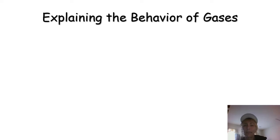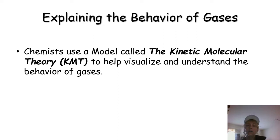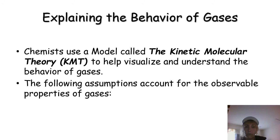How do chemists explain the behavior of gases? Chemists use a model called the kinetic molecular theory, or KMT, to help visualize and understand how gases behave. We're going to look at the tenets of the kinetic molecular theory of gases. The KMT has assumptions, and these assumptions account for the observable properties of gases.